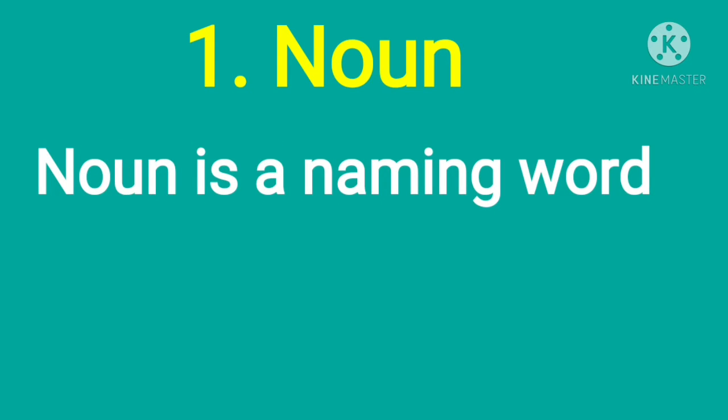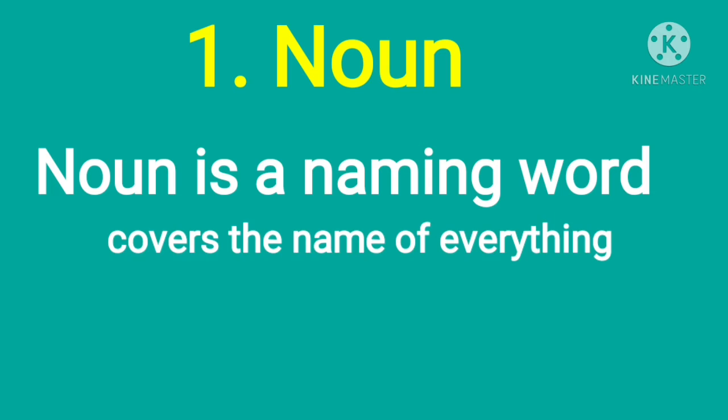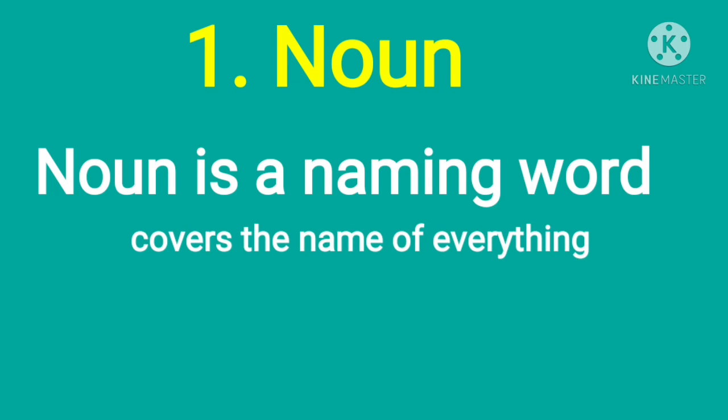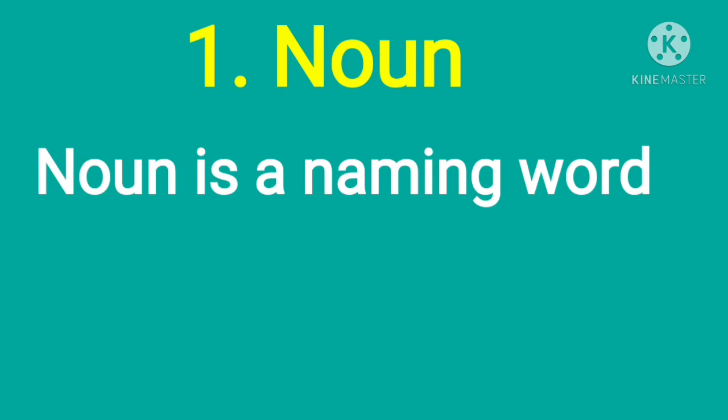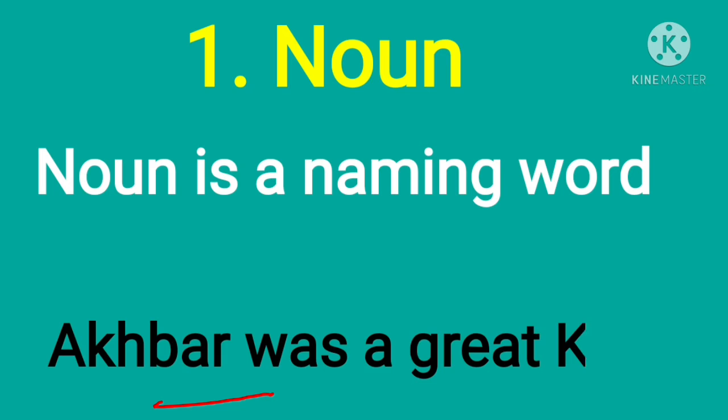We can also say noun is the naming word. When we use this definition, it covers everything: the name of a place, animal, feeling, quality, etc. Let us take the example: Akbar was a great king. So here, Akbar is the noun—it is the name of a person.